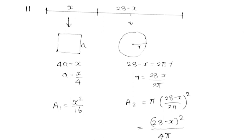Answer. For the square: 4a = x, so a = x/4. Area of square A1 = x²/16.